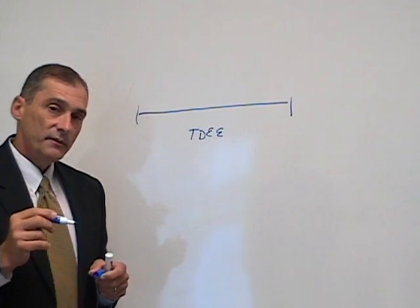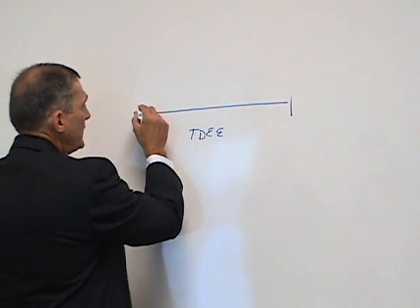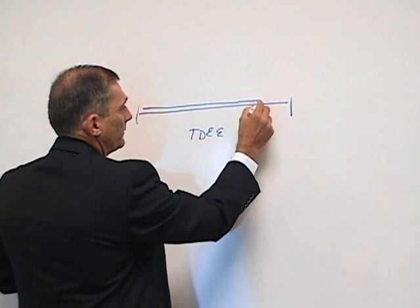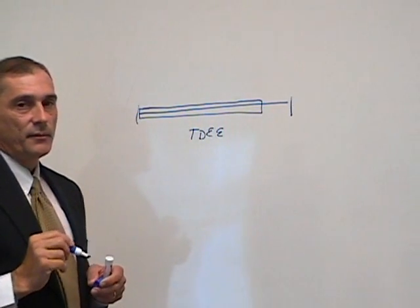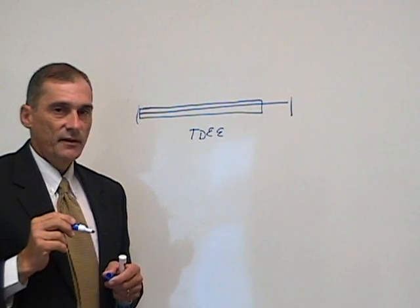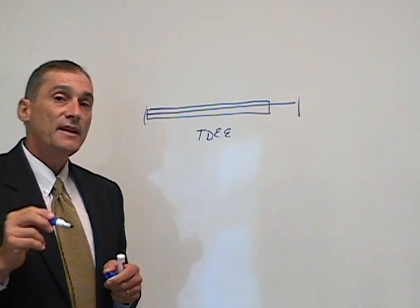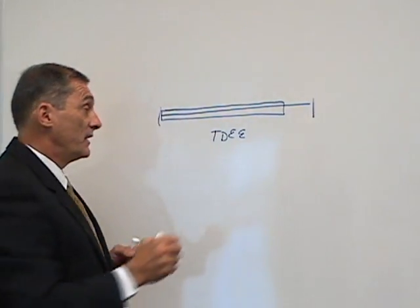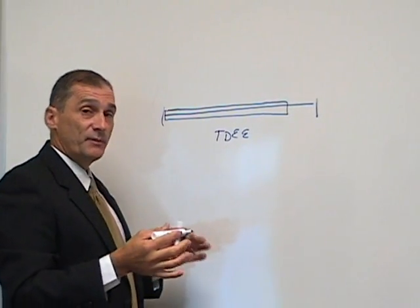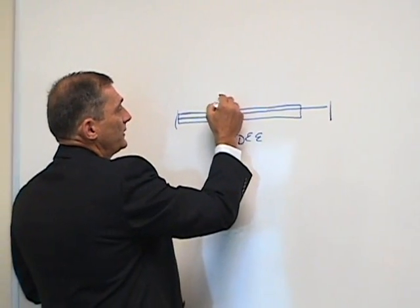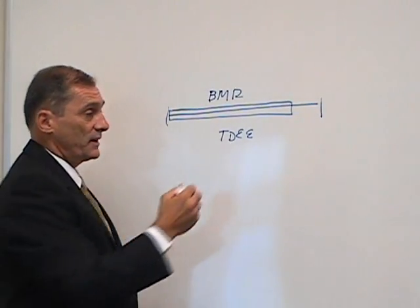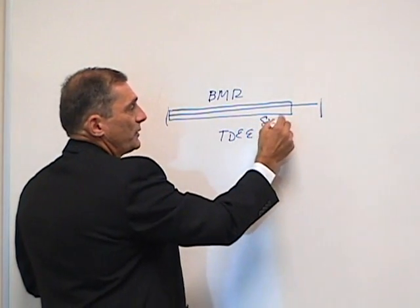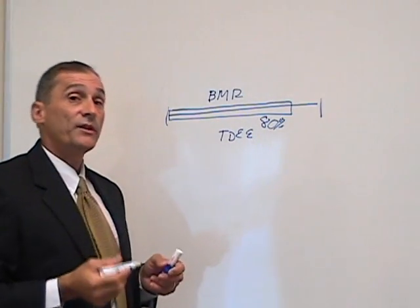Some people are shocked when they hear that about 80% of these calories are spent by doing nothing every day. They are burned by simply laying in bed all day long. This is not just my wisdom, this is true scientific knowledge. This is called BMR, basal metabolic rate, and it represents about 80% of all the calories that we spend in a day.